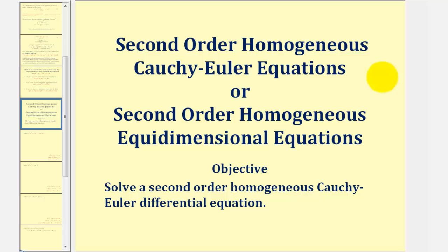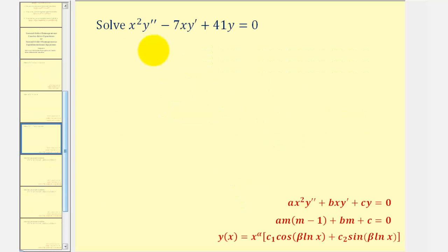Welcome to a third example on how to solve a second order homogeneous Cauchy-Euler equation. Looking at our differential equation, the first thing we should recognize is that we have a second order differential equation and also that it's homogeneous because the right side is equal to zero.